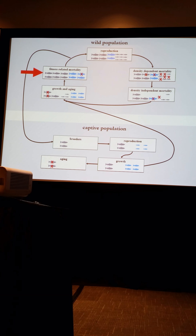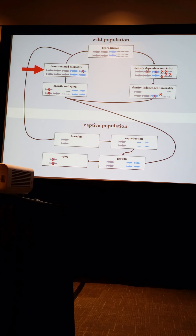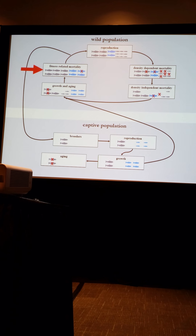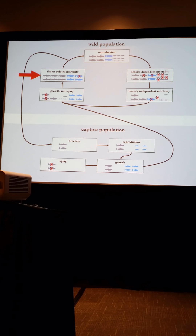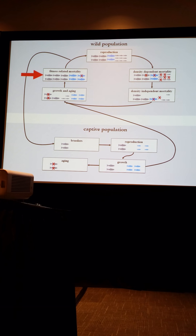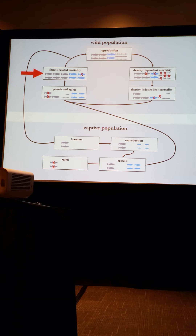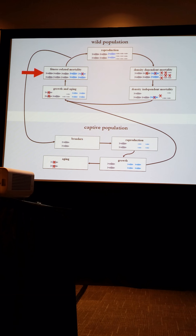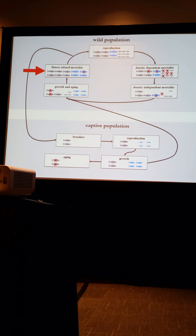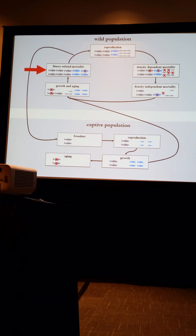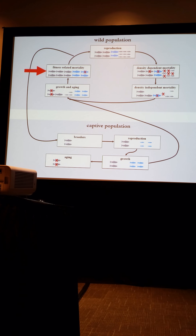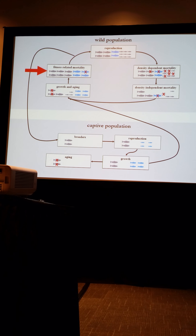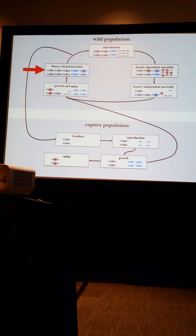Importantly, we modeled adaptation to captivity by applying a one-time survival cost to any individual born in captivity. For example, if we wanted to model the effects of a 10% fitness reduction — assuming the individual born in captivity had both parents without any captive ancestry — that individual would have a 10% chance of being removed from the population at the fitness-related mortality event. If we wanted to model a 50% reduction, it would have a 50% chance of being removed at that time.